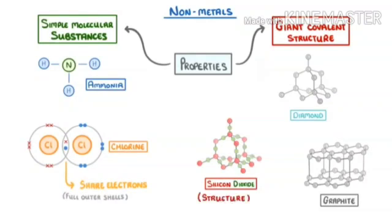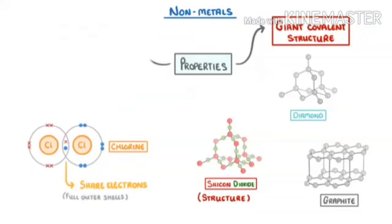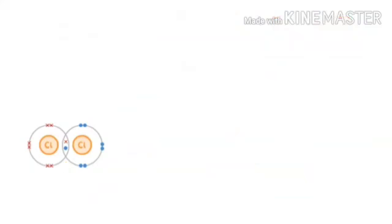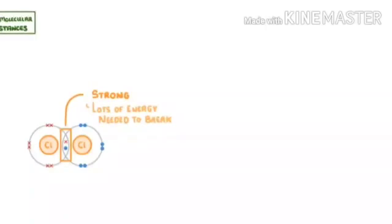Let us take an example of a chlorine molecule. Although the covalent bond in one chlorine molecule is strong, and we have to supply a large amount of energy to break this covalent bond.